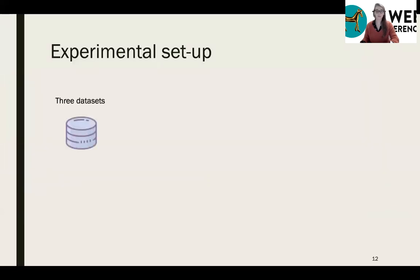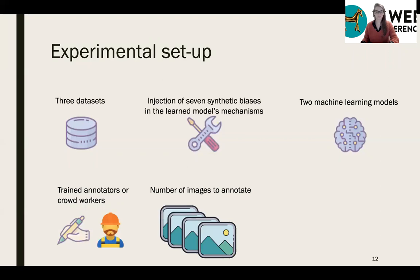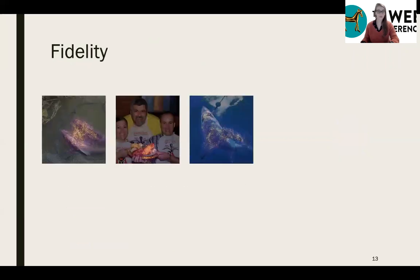So we created multiple models for which we can estimate the ground truth mechanisms more precisely. For that, what we did is that we used three datasets. And for each of them, we introduced synthetic biases that should skew the model's mechanisms towards certain concepts. We also used two different machine learning models known to have slightly different mechanisms. And then in each case, we observed whether the explanations reflected the skews. Then for scalability, we varied two main hyperparameters of the method: the type of annotators we used and the number of images annotated.